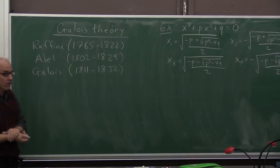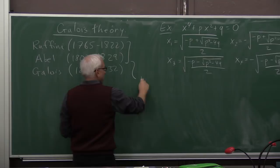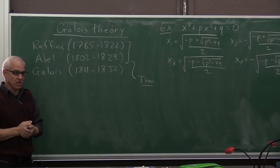All right, so let's carry on here now with this new chapter, Galois Theory. So after Lagrange, the stage was set, and then Ruffini and Abel proved the famous theorem that quintic equations, general quintic equations, are not solvable by radicals.